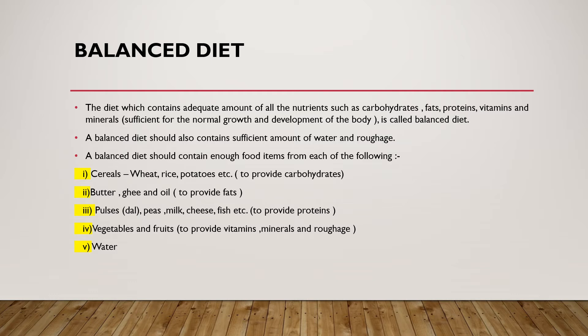Milk, cheese, and fish also provide protein. Vegetables and fruits are very important because they provide vitamins, minerals, and roughage. Lastly, water is the most important component of a balanced diet. Our balanced diet should contain all these food items in a proper proportion.